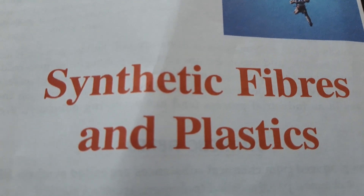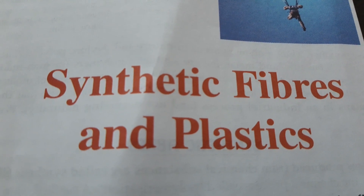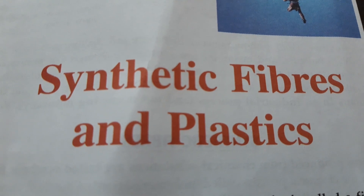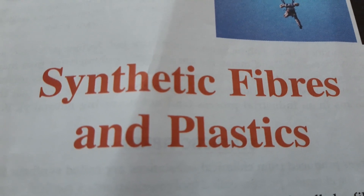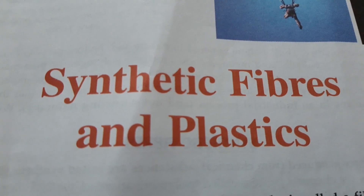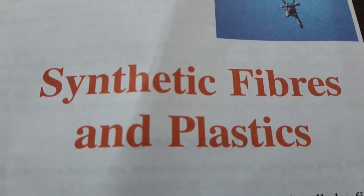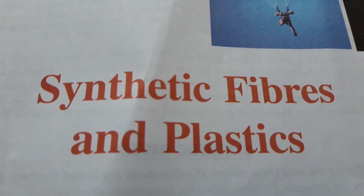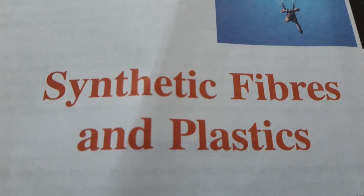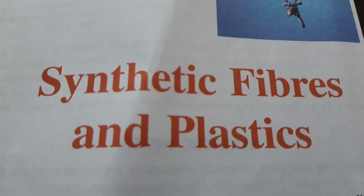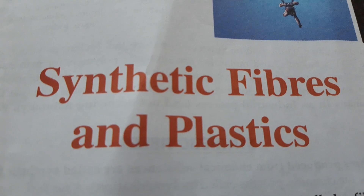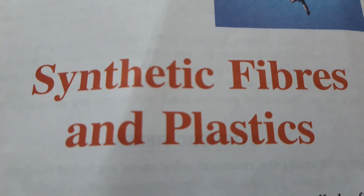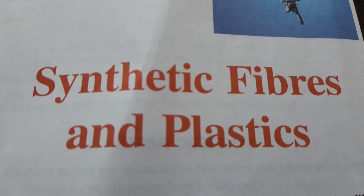There are two types of fiber. One is natural fiber and another is synthetic fiber. Natural fibers we obtain from plants and animals. Like cotton and jute, these are natural fibers obtained from plants. Silk and wool are animal fibers — natural fibers obtained from animals. Synthetic fibers are those which are obtained from petrochemicals. They are made artificially in the lab. They are also called artificial fibers.